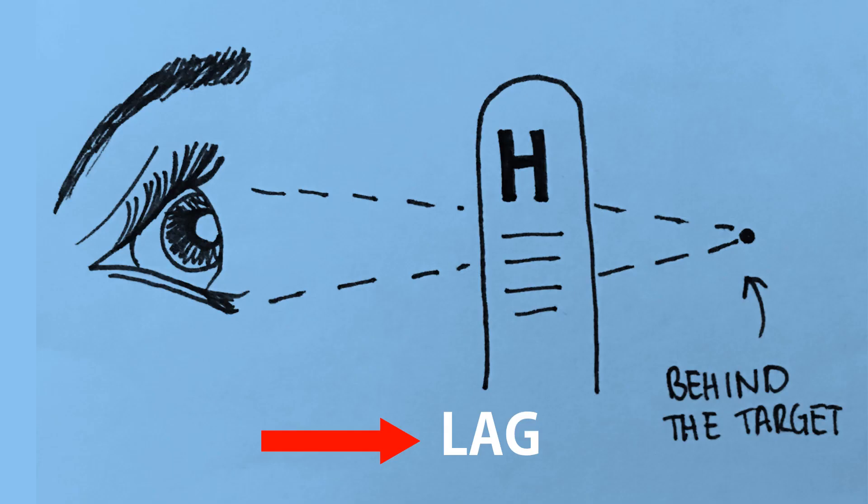Normally when we focus on an object, for example a fixation target, we don't focus exactly at the target itself — we focus a little behind it. This is because of depth of field; the accommodative response is generally less than the stimulus. Our system can do less work, less focusing, and still see the target clearly. Think about it — why should we do more work when we don't need to?